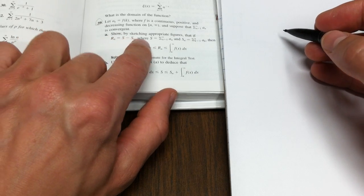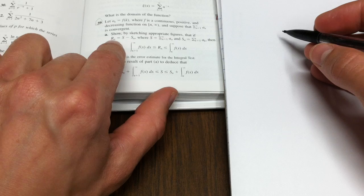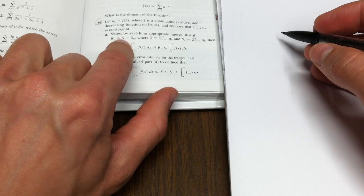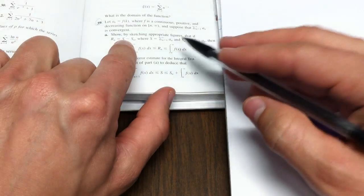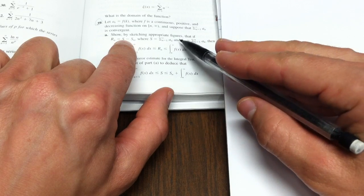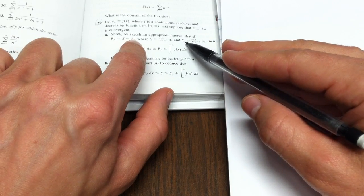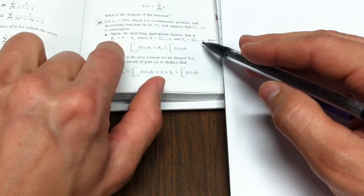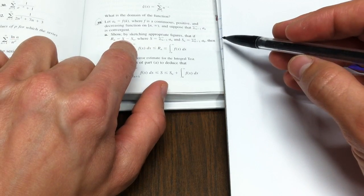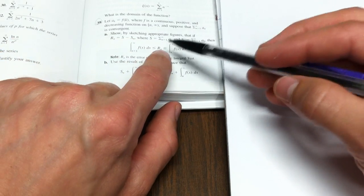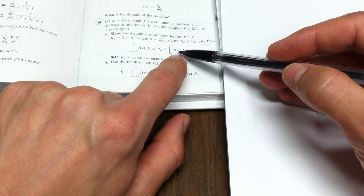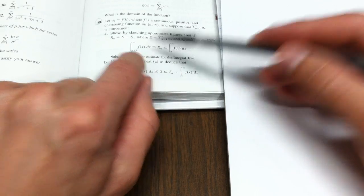Part A asks us to show by sketching appropriate figures that if Rn, that's the error, equals S, that's the series, minus the partial sum Sn, the nth partial sum—so the error would be the difference between the exact answer and the partial sum—then the error is less than or equal to this integral, but greater than or equal to that integral.